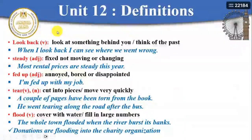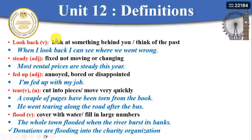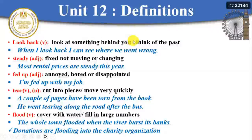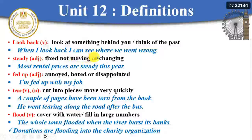First of all, the word 'look back.' What does this word mean? 'Look back' as a verb has two meanings. The first one: look at something behind you — there is something or someone behind you. For example: 'When I look back, I can see where we went wrong.' This is another meaning: to think of the past, to think about events that happened to you.